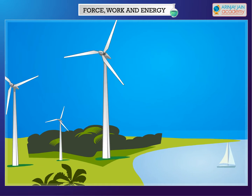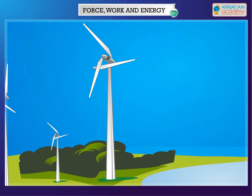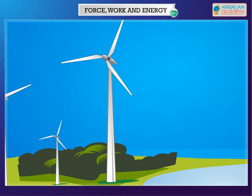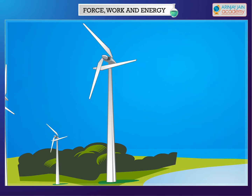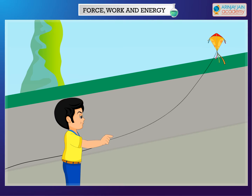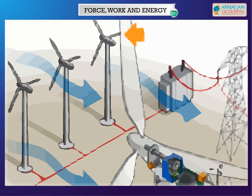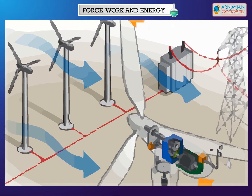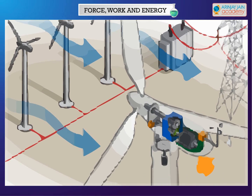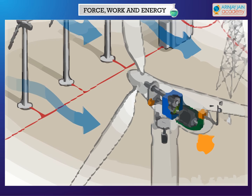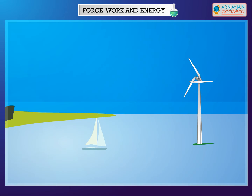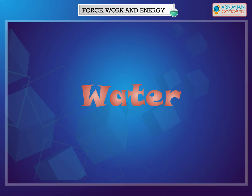Wind. Wind has energy stored in it. It is used to sail boats, fly kites, and also helps in producing electricity. Wind energy can be used to run flour mills or draw water.